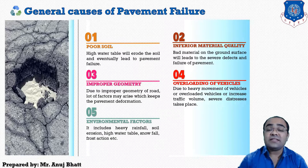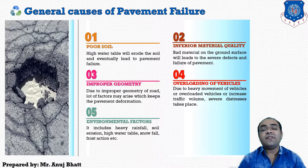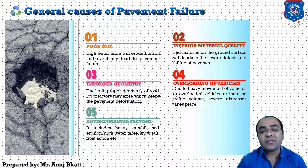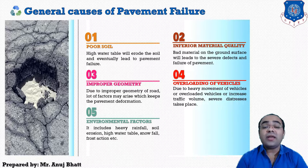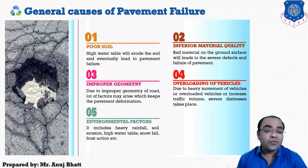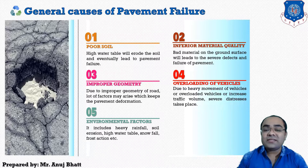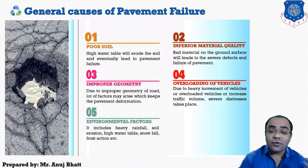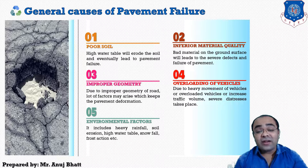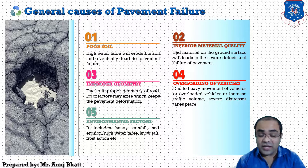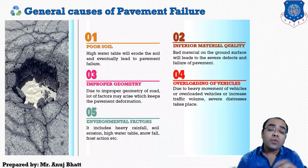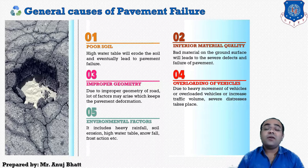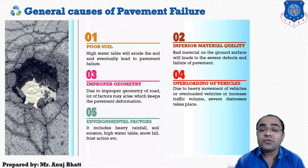The next cause is environmental factors, which include heavy rainfall, soil erosion, high water table, snowfall, frost action, etc. If we are constructing a road in a cold weather area, there may be chances of snowfall and frost action. In heavy rainfall areas, the rising water table will erode the soil. The rising groundwater due to rainfall can also cause soil erosion and increased water table. In the monsoon season, there may be a lot of pavement failure due to changes in geological formation in the ground.